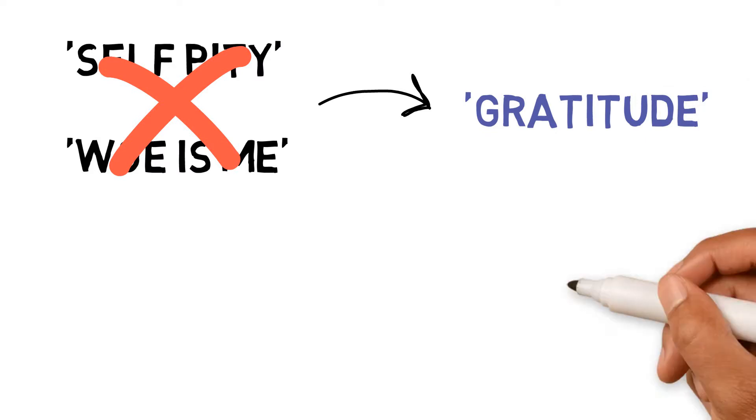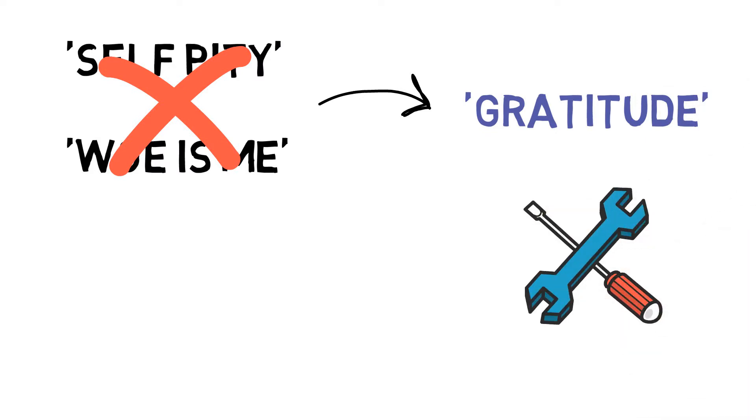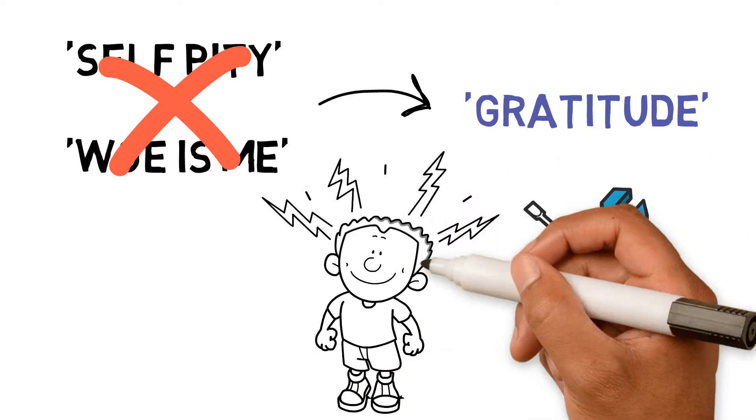Amy Morin suggests replacing self-pity and a woe-is-me attitude with gratitude, and this can be a simple fix to a problem, subsequently making you a mentally stronger person.